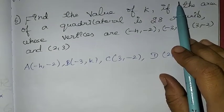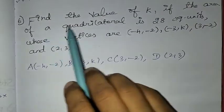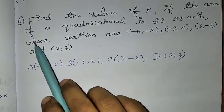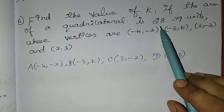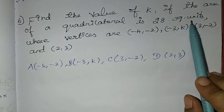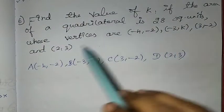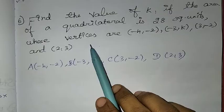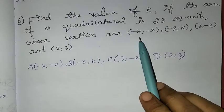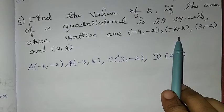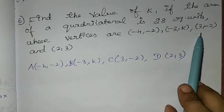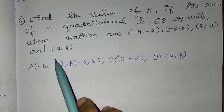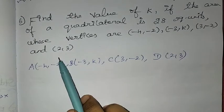The problem is: find the value of k if the area of a quadrilateral is 28 square units, whose vertices are (-4, -2), (-3, k), (3, -2) and (2, 3).